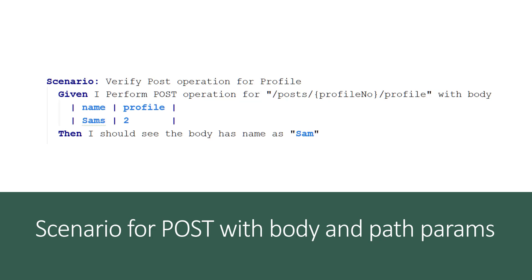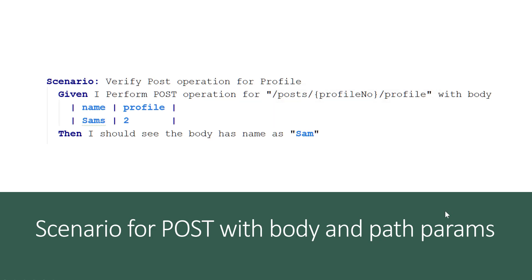We are going to write a scenario where we can verify the POST operation for the profile that we saw in our previous video. The scenario is: given I perform a POST operation for the path slash profile number slash profile with body. As you remember from our previous videos, we discussed how we can use the path parameter where we write the path parameter in curly braces, and the curly brace key gets replaced with the value we are looking for.